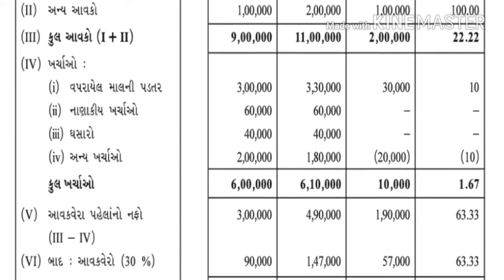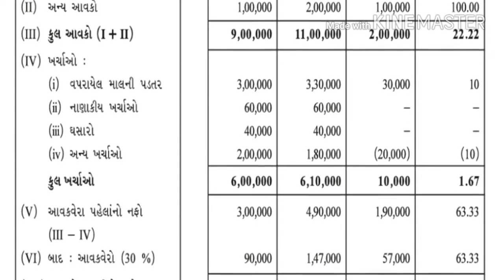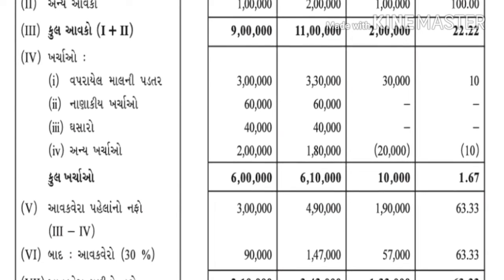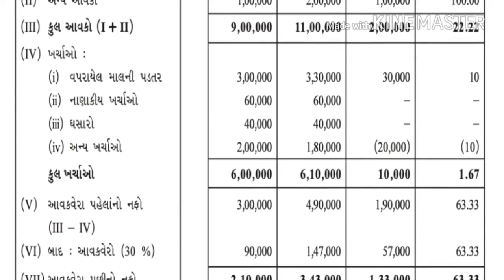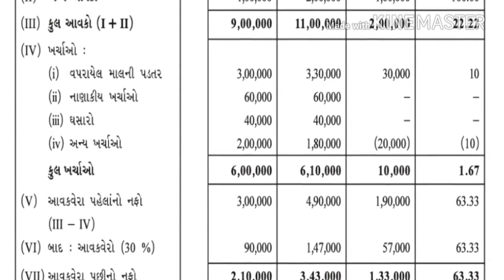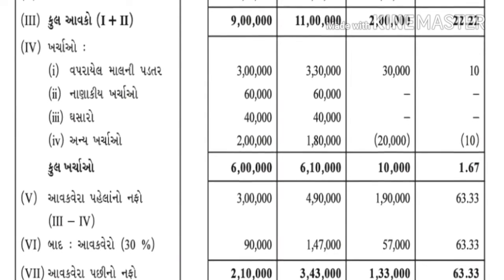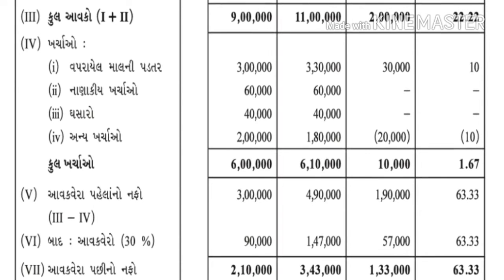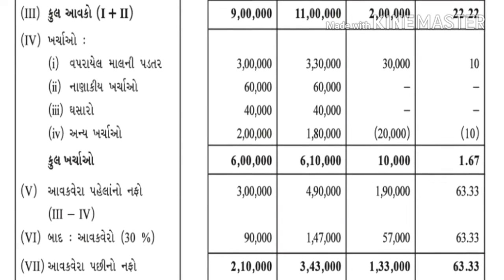કુલ ખર્ચાઓ - ટકાવારી - 10 હજાર ભાગ્યા 6 લાખ ગુણ્યાં 100 - એટલે 1.67% - કેલ્ક્યુલેટરમાં મળશે. હવે આપણે વધારો/ઘટાડો રૂપિયામાં શોધીએ - રૂપિયામાં કેટલો વધારો/ઘટાડો થયો?